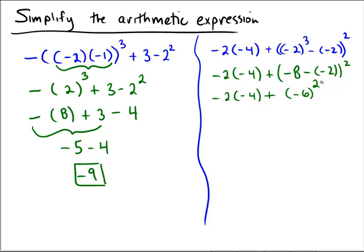Now exponentiation, so we're going to perform the exponentiation, still keep this over here the same. And negative 6 squared is negative 6 times negative 6, which is a positive 36.